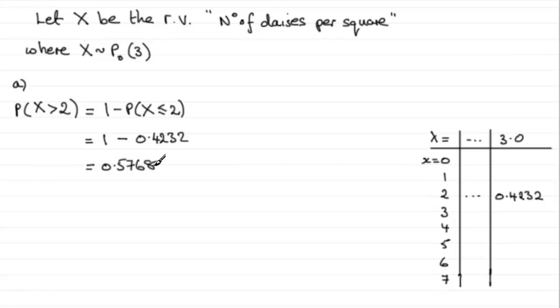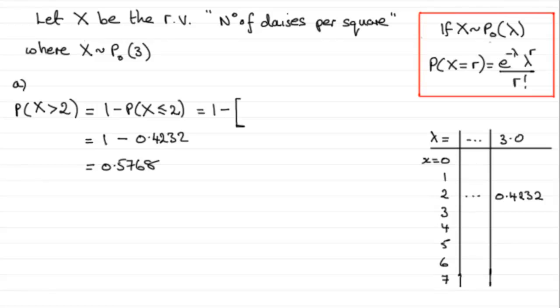But you have an alternative way of establishing the probability of X is less than or equal to 2. You could have carried on and just said, this is 1 minus the probability that X equals 0 plus the probability of X equals 1 plus the probability of X equals 2. And when it comes to working out those probabilities, you should be familiar with the particular way that we can work out the probabilities from a Poisson distribution through this formula here.